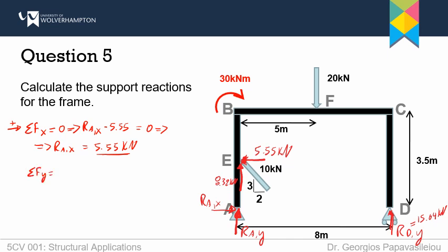Nevertheless, let's go to the last one. So, Fy, the sum of Fy equals 0. All forces in y direction have to sum up to 0. Let's assume that the ones pointing upwards are positive. So, RAY plus 8.32, which is the force at point E, minus 20, which is the force at point F, plus 15.04, which is reaction Rdy, have to sum up to 0. So, if I solve for RAY, it is negative 3.36 kN, meaning that it should be in the opposite direction.